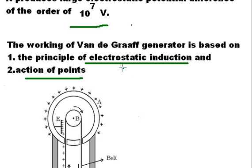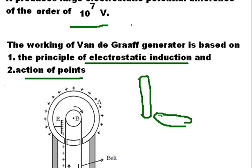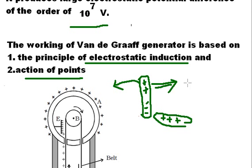Electrostatic induction is the production of charges without any contact. For example, if you bring a rod with positive charges near a neutral rod, there will be charge separation — negative charges are attracted to one side. If a connection is made and the positive charges are removed, the neutral rod becomes negatively charged. Without any contact, we have produced charges — this is electrostatic induction.